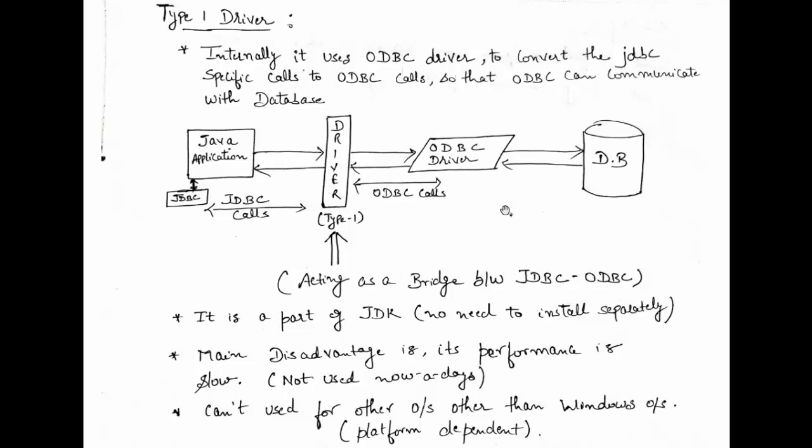The advantage of this driver is that it is database independent, making it very easy to migrate from one database to another. Migration is easy because the JDBC Type 1 driver is database independent — it is completely the ODBC driver's responsibility to communicate with the database. In subsequent lectures, we will look at the other types of JDBC drivers.